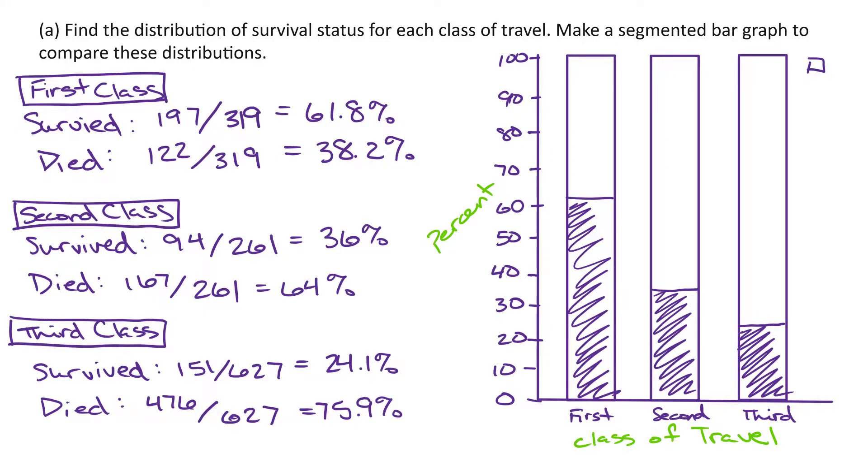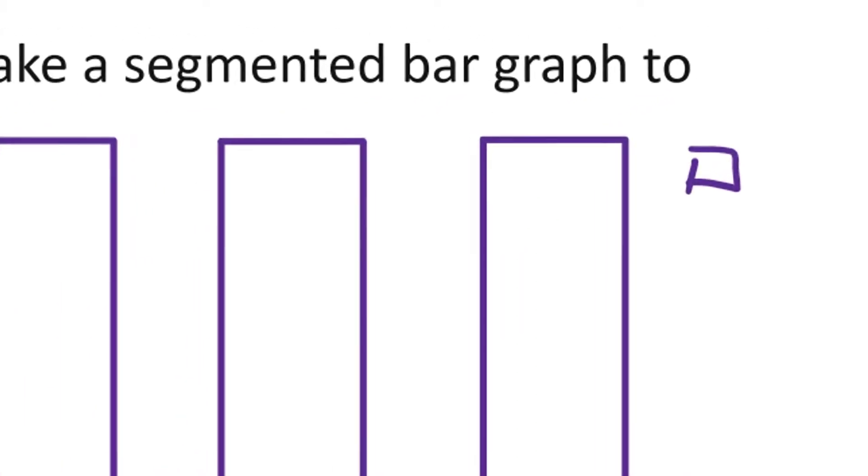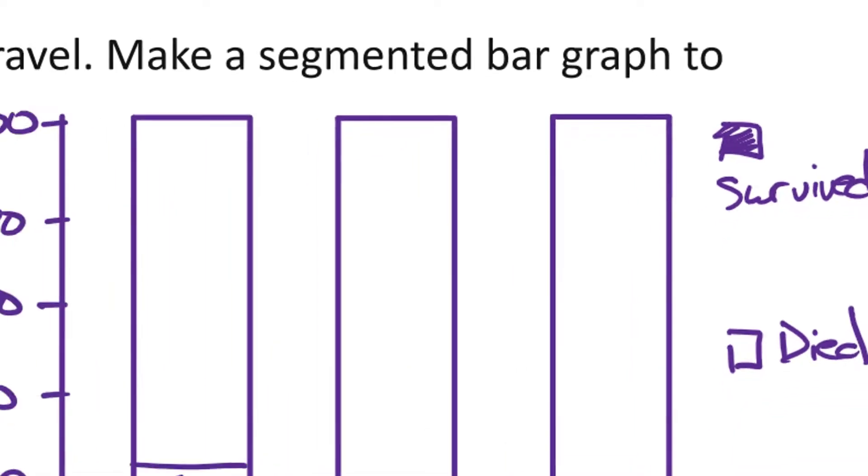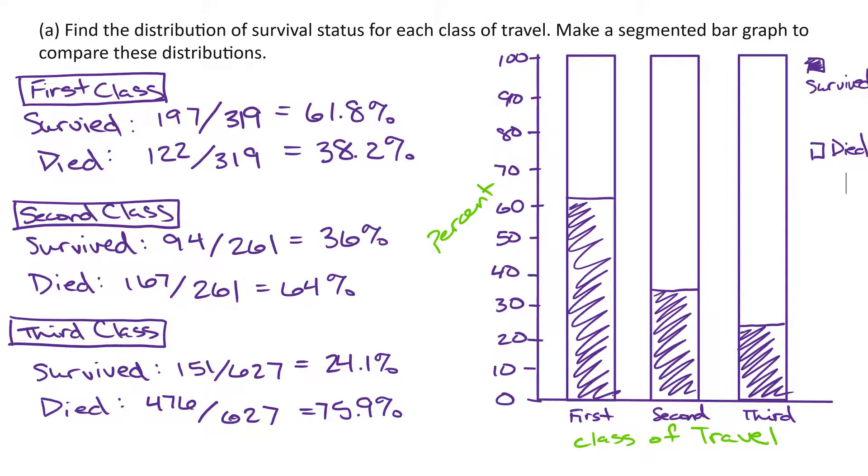And then off to the side, you're just going to make a little key. So the shaded, this is who survived. And then just the open, this will represent who died. So again, once you do your side work, the first class, second class, and third class distributions, these come together pretty quick.